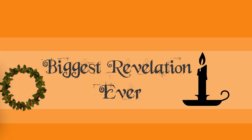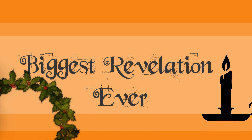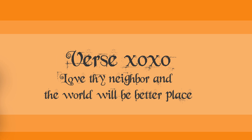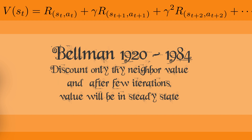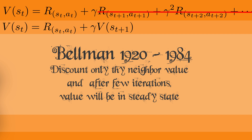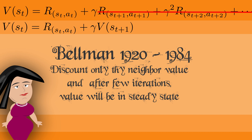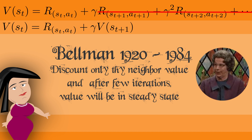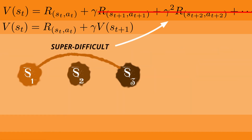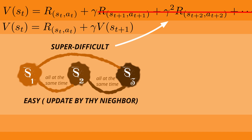There is one last revelation that I would like to make. As my nanny says, love thy neighbor and the world will be a better place. Well, guess what Bellman said? He said that discount only thy neighbor's value, and after a few iterations the value will be in steady state. But for each single state, you need to love thy neighbor — I mean update based on your neighbor. You don't need to discount all the way up. Just discount the neighbor and the reward will start flowing everywhere.